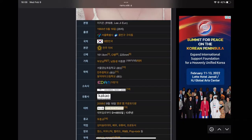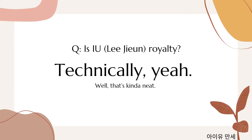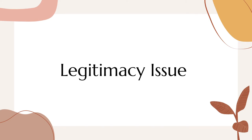When we look up IU, we can see that she is from the Jeonju Lee clan, which is in fact the royal family of the Joseon dynasty. So technically IU is a descendant of one of the kings from the Joseon dynasty. Does that make her royalty? Well, technically yeah. You may have noticed that I used the word 'technically' numerous times throughout this video, and this is because although every Korean person is part of a clan, this is very unreliable in determining if they are legitimately a descendant of their respective clan founders.